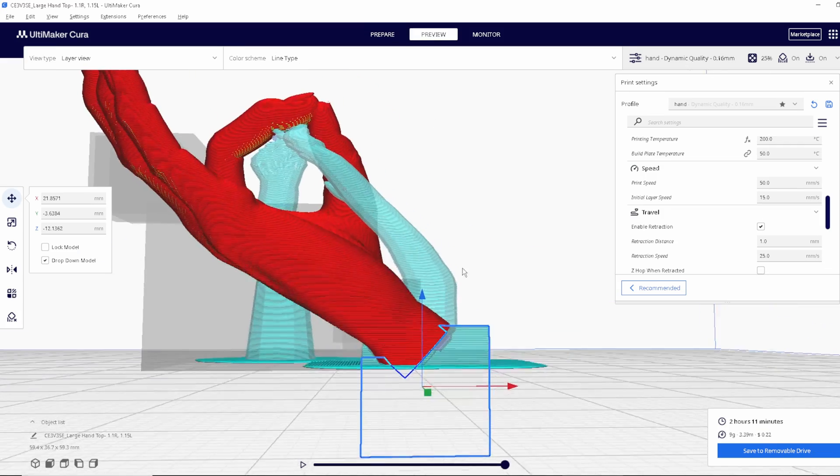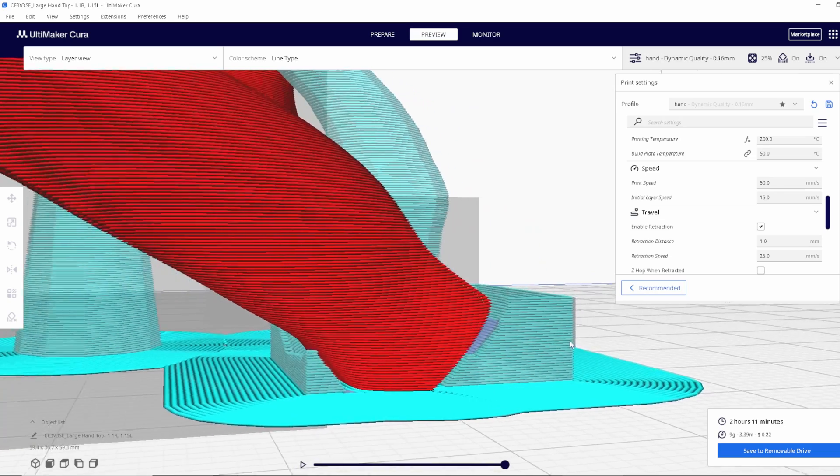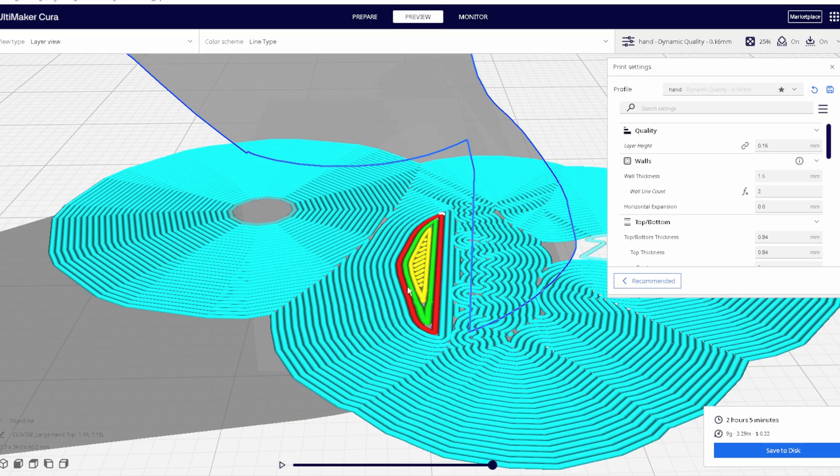Once you have angled your model, fixed your supports and adjusted your settings, you are now ready to print. Now we have three lines connecting the model to the print bed instead of one. This is going to significantly help with the adhesion and keeping that model perfectly still throughout the printing process.